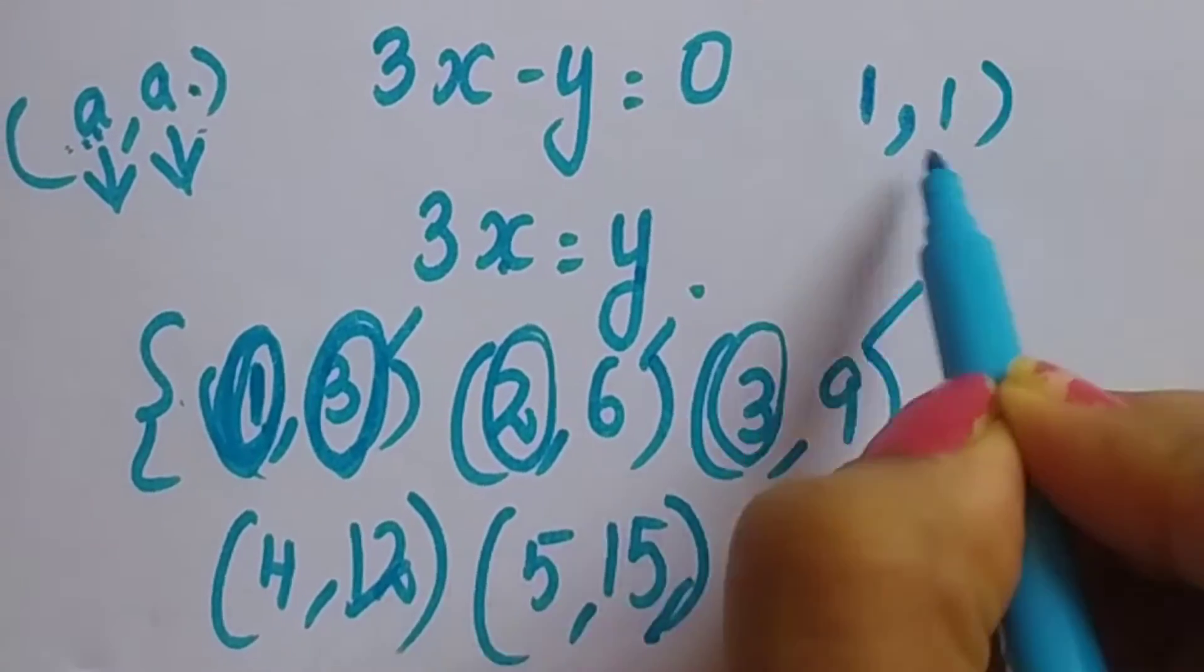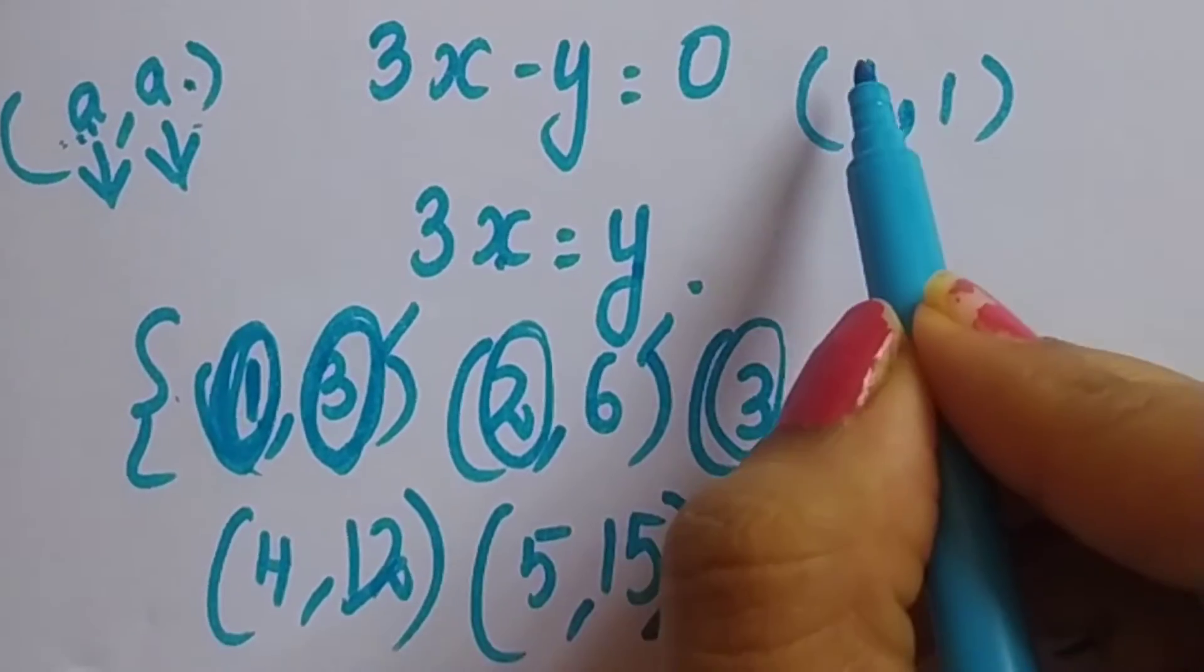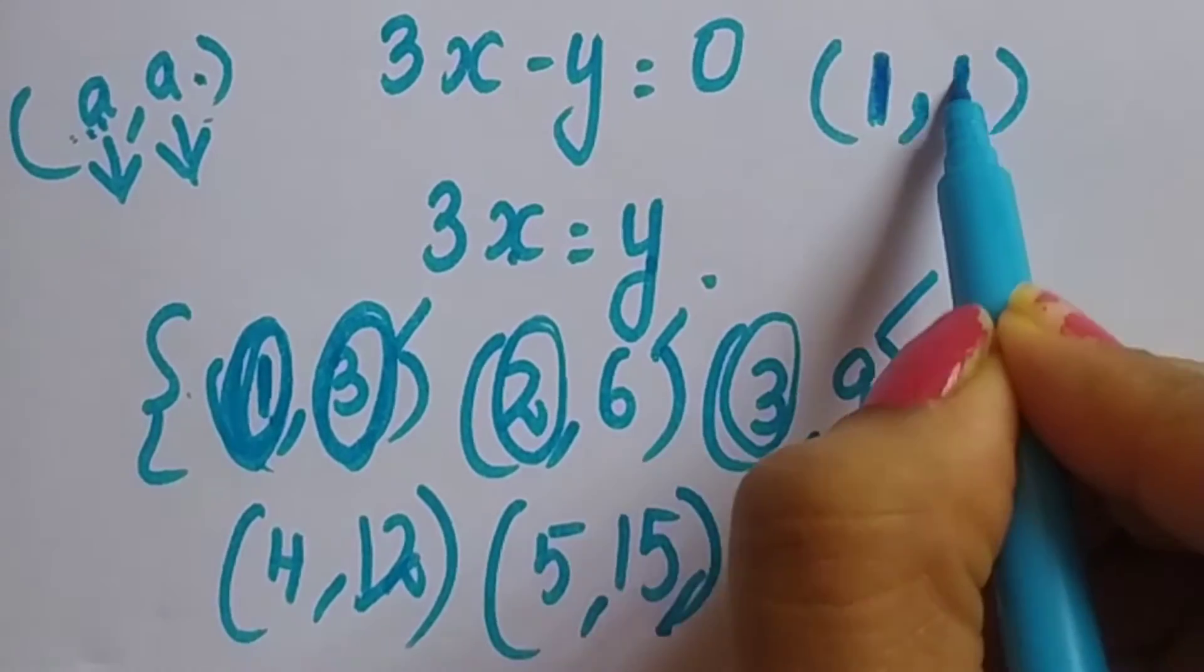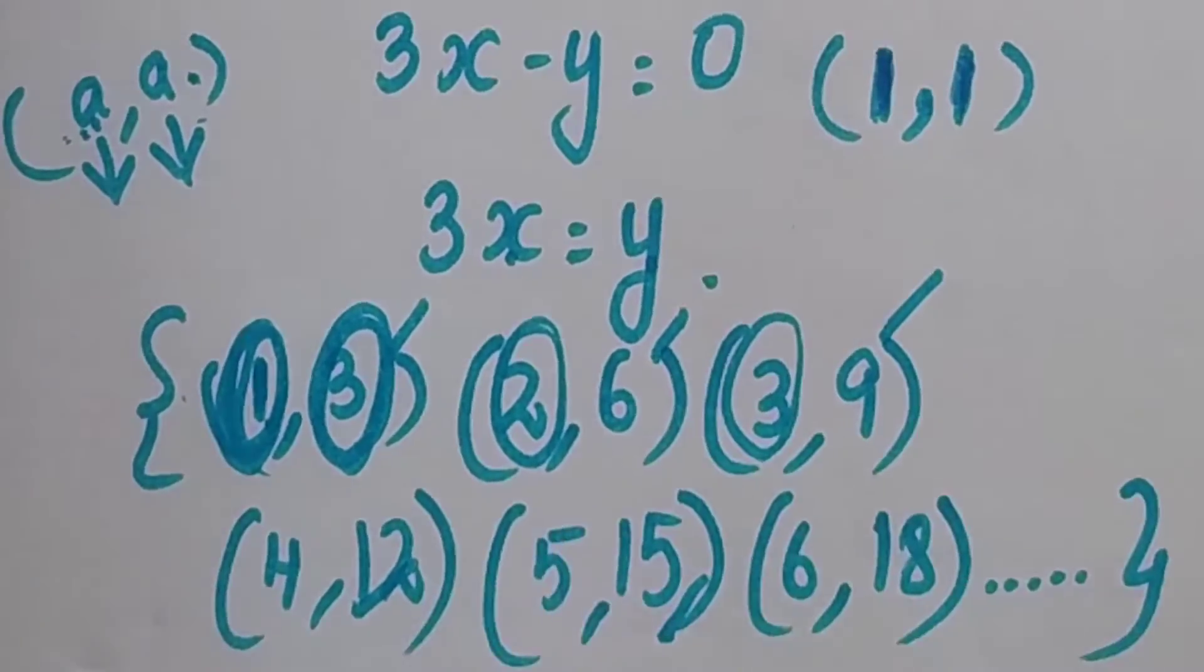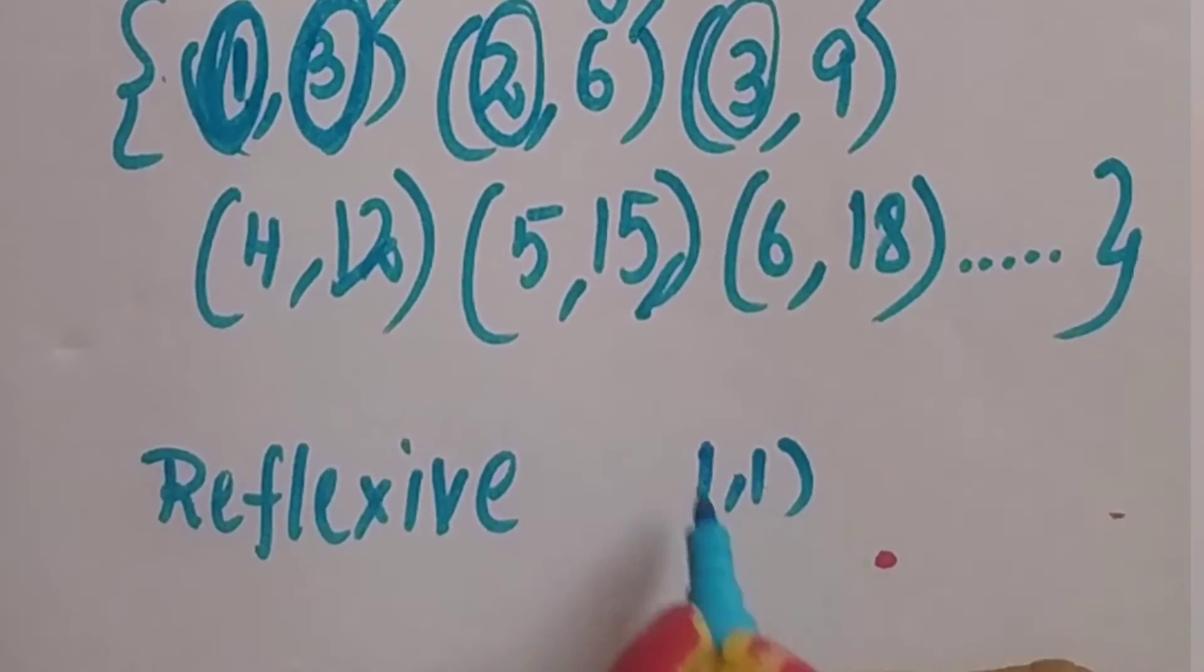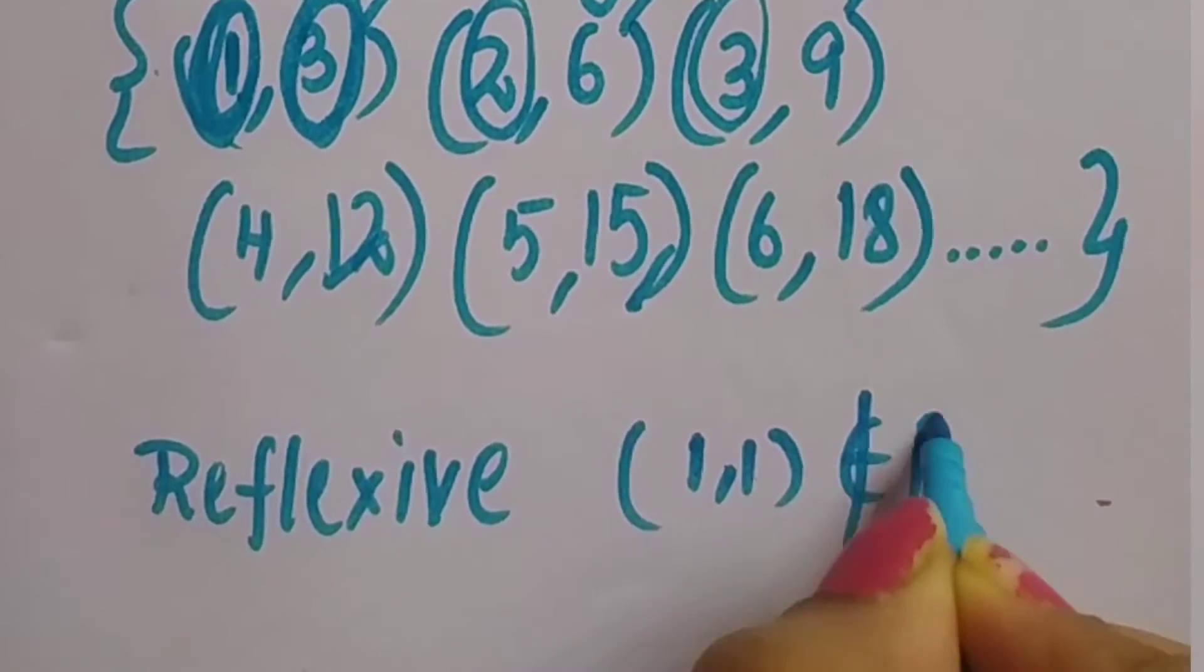We can take an example, like if the first element is 1, there should be another element 1. So there is no element 1, 1. So hence, 1, 1 does not belong to R.